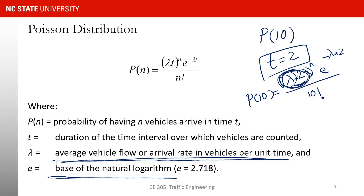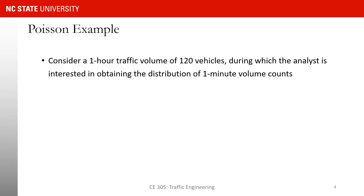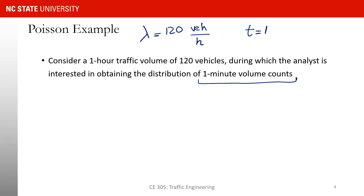So the Poisson distribution equation is not very complex: n is the number of vehicles, t is the duration, and λ is the average vehicle flow rate. Let's go through an example. Suppose we have a one-hour traffic volume of 120 vehicles, meaning λ = 120 vehicles per hour. The analyst is interested in obtaining the distribution of one-minute volume counts, so t = 1 minute.